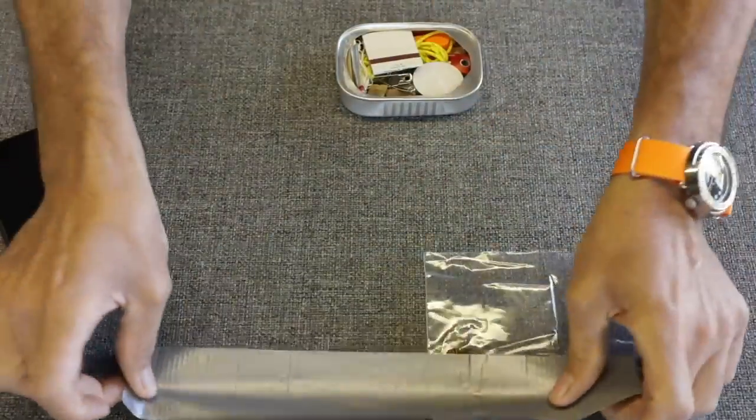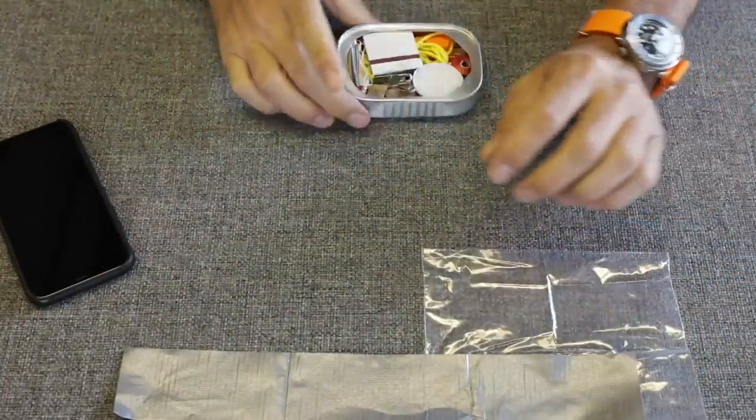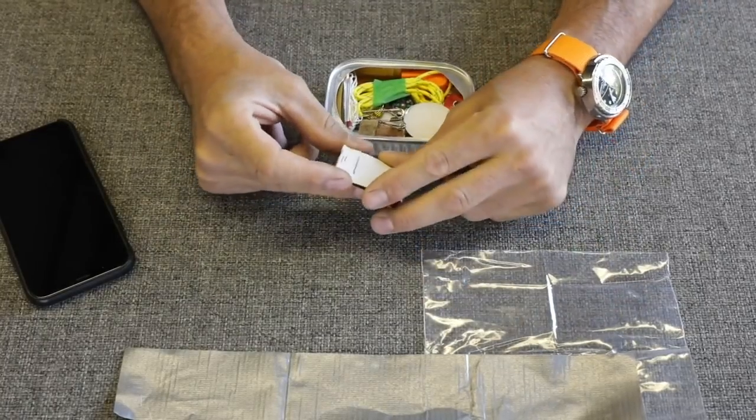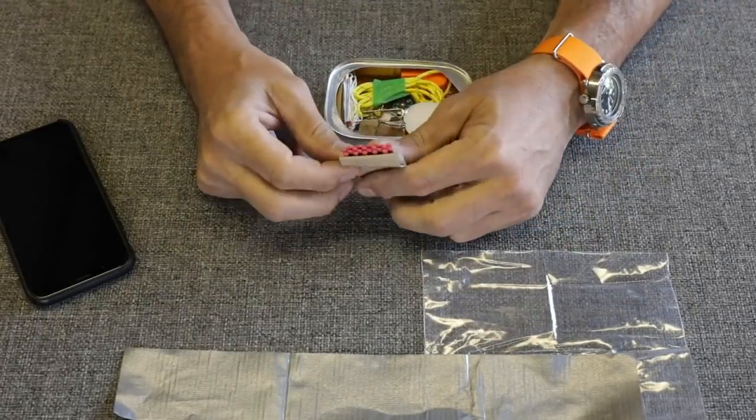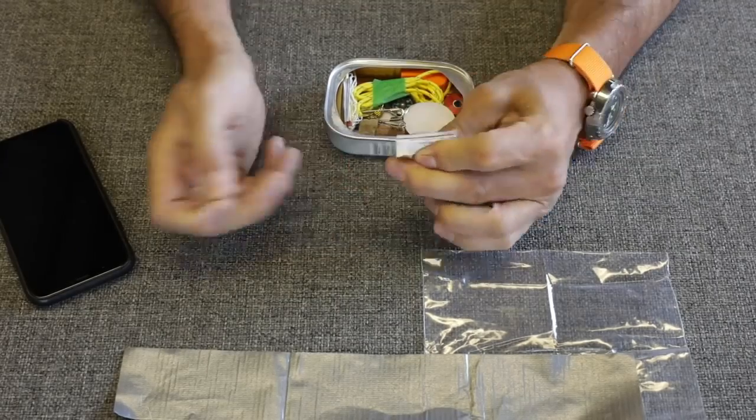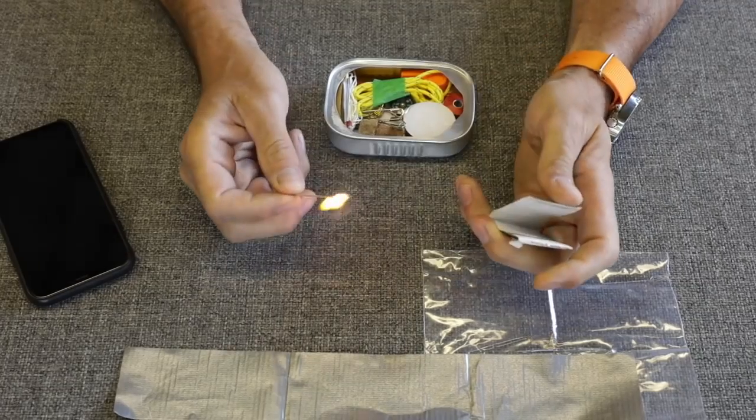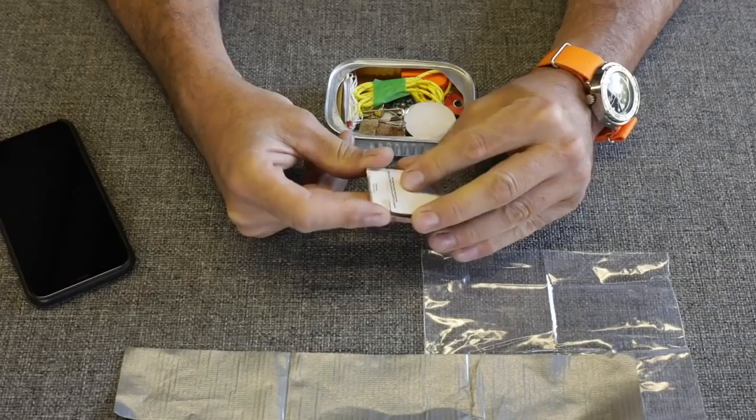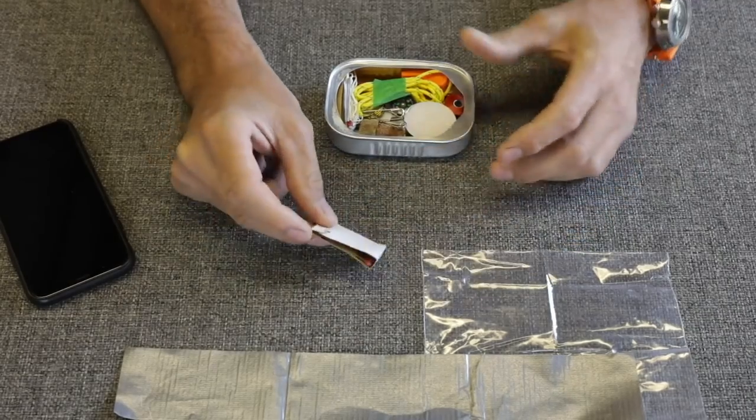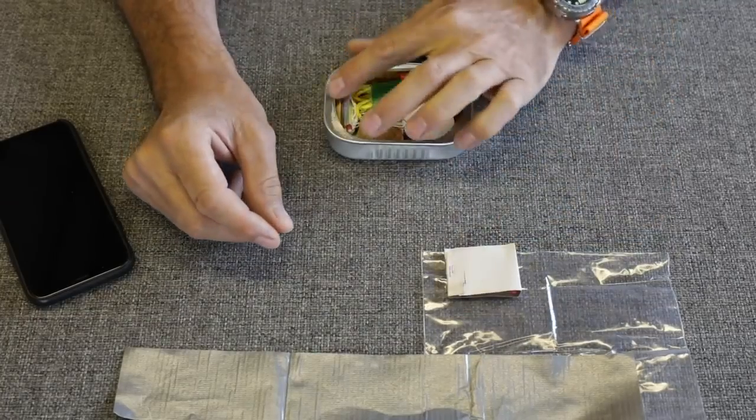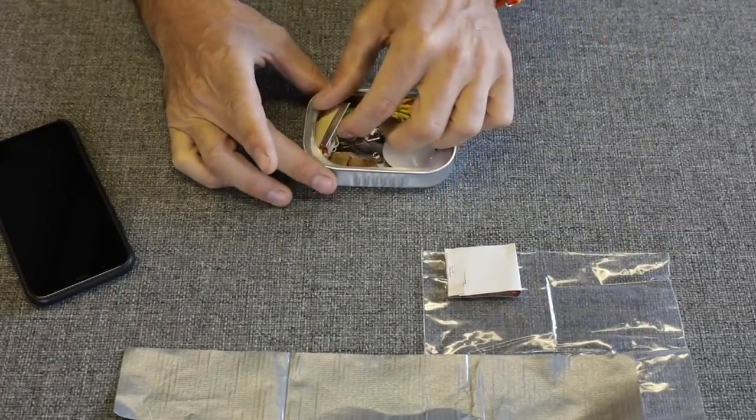Next we have paper matches, just your standard paper matches. Maybe wooden matches would be a better option. These are a little bit fragile when it comes to moist areas, but better than none. I think that's probably a good option. I don't know that you would even get the wooden matches inside of one of these containers. It's very small. This is actually a pretty cool kit.